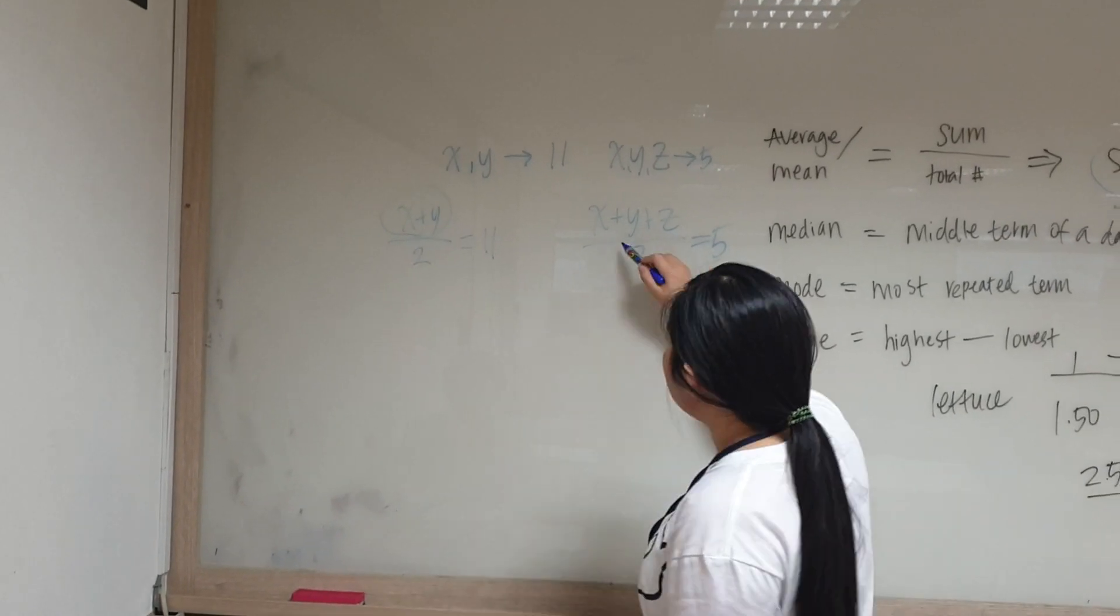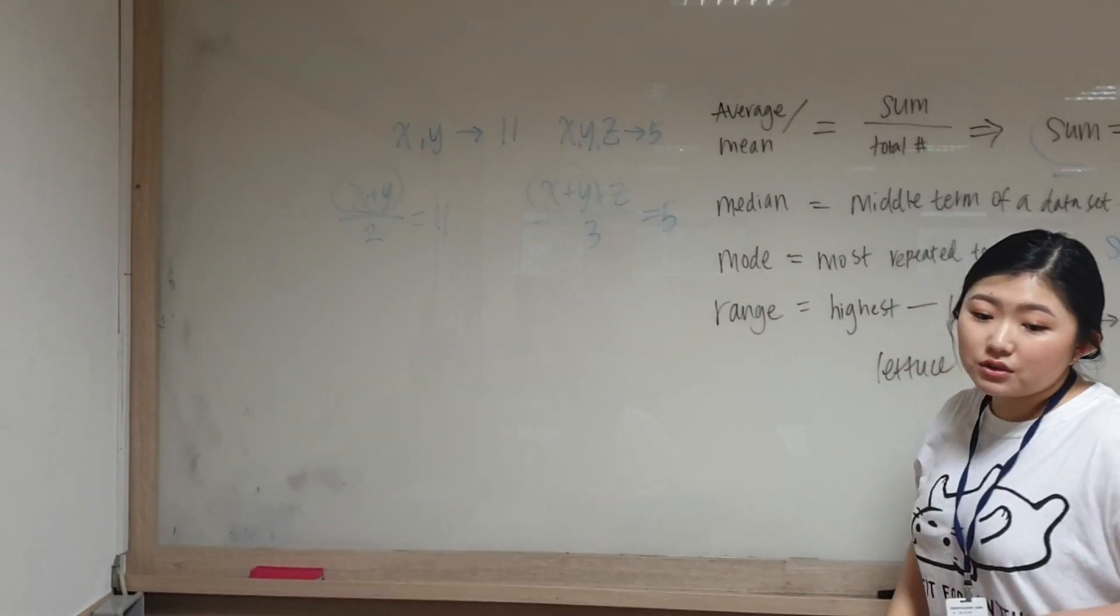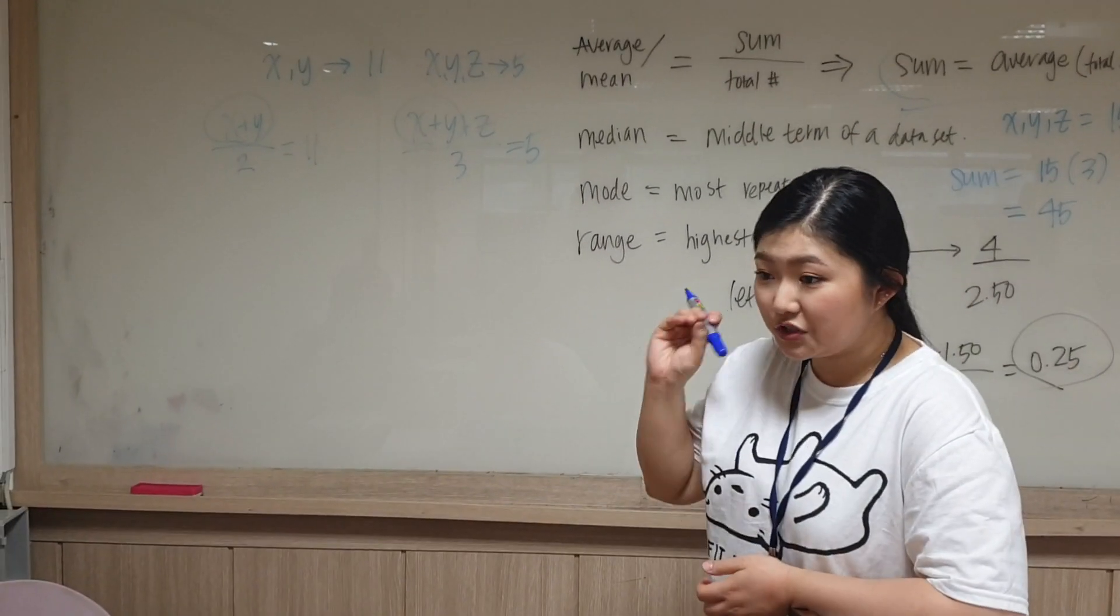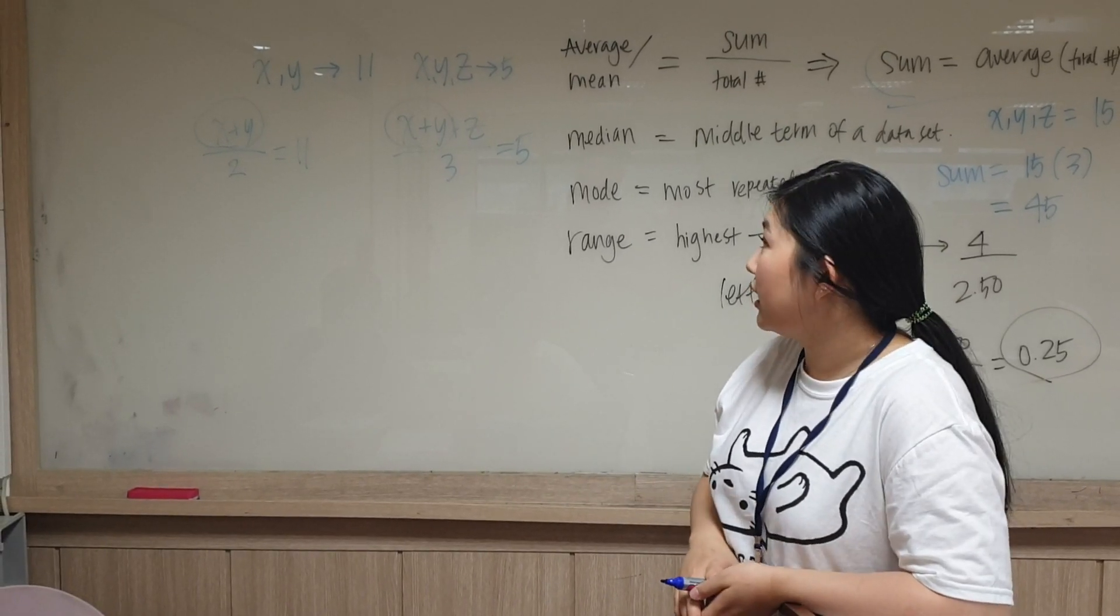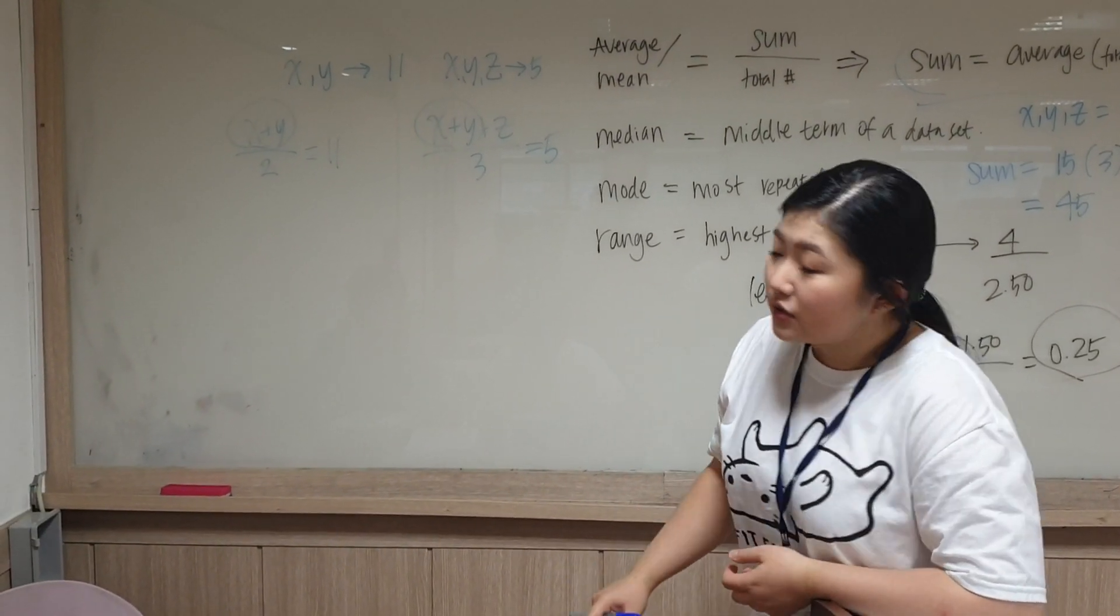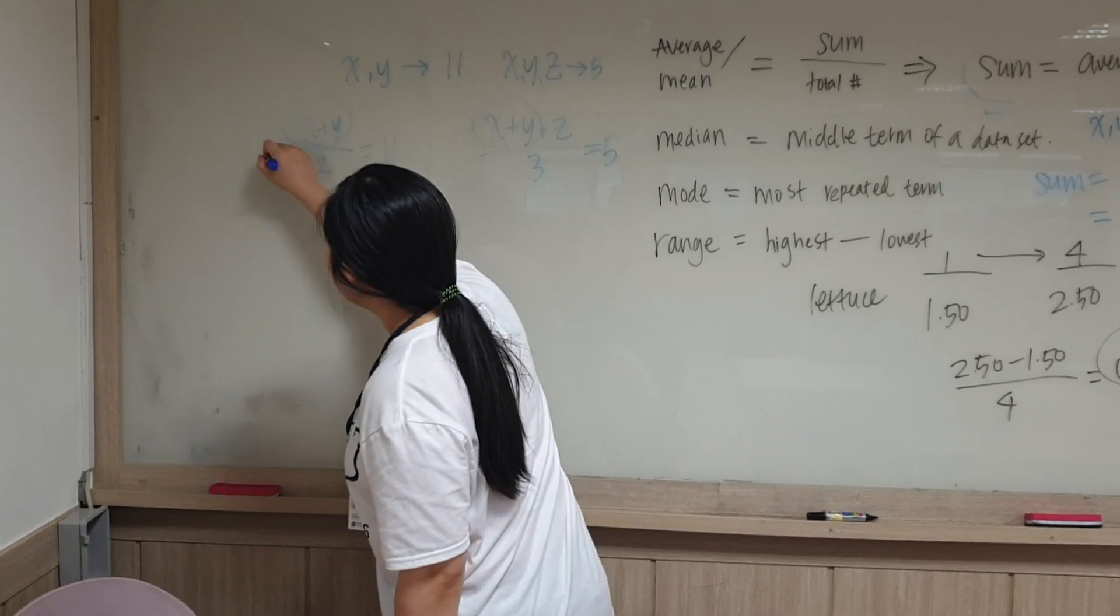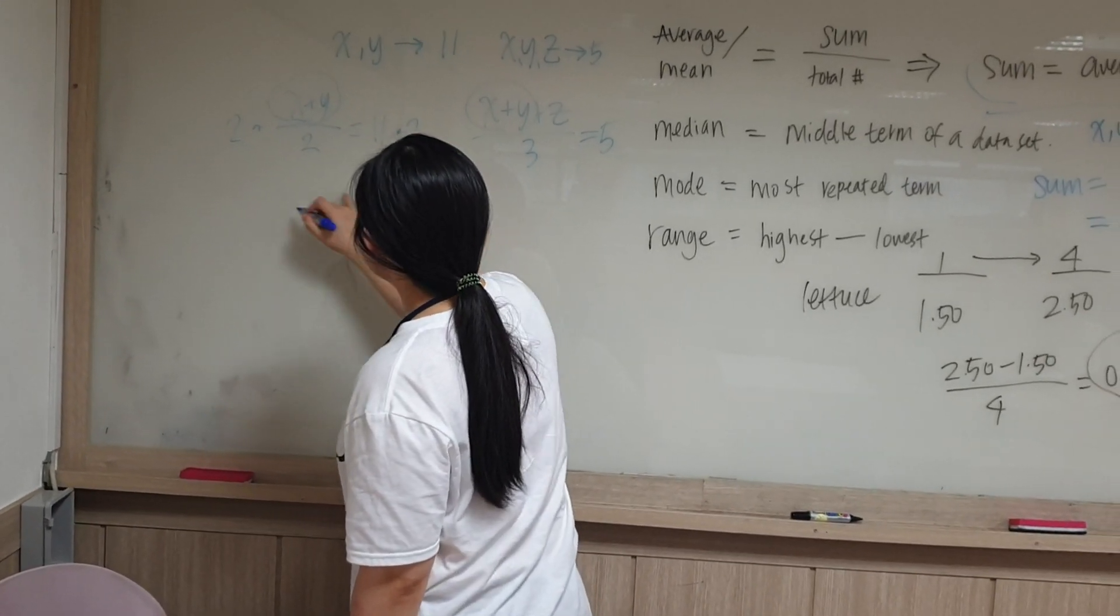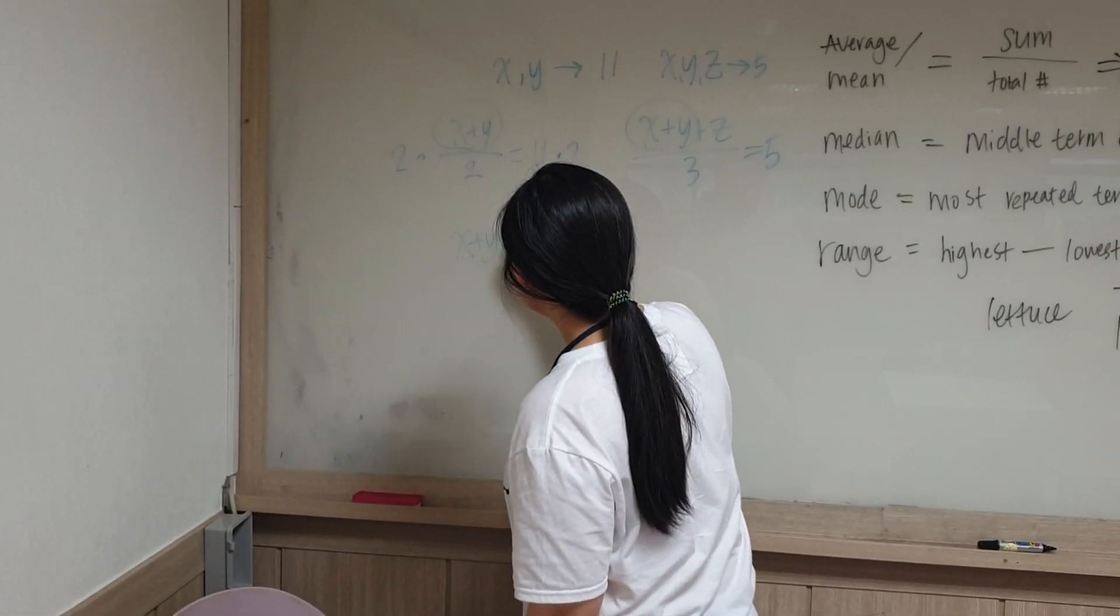So you find that by multiplying this side by two. You get that x plus y should equal 22. So yeah, x plus y needs to equal 22.